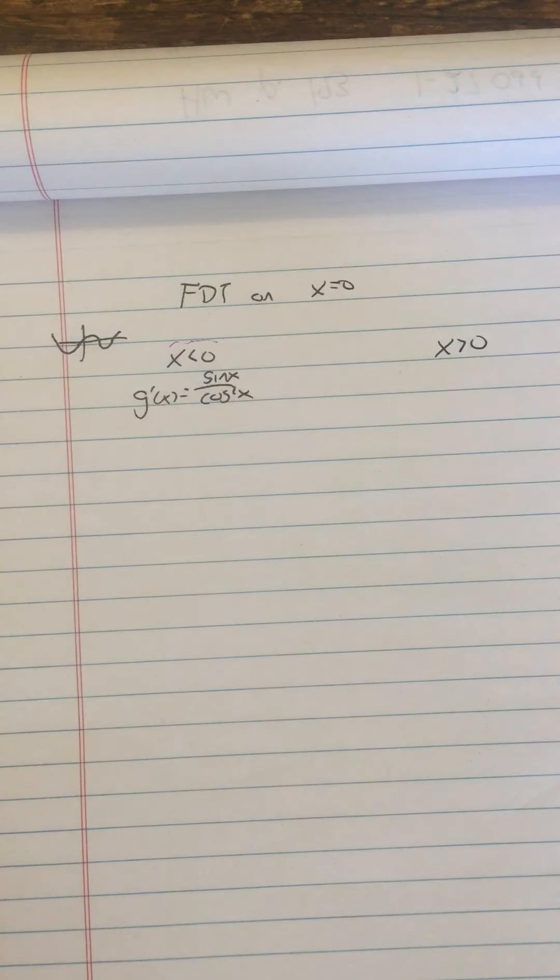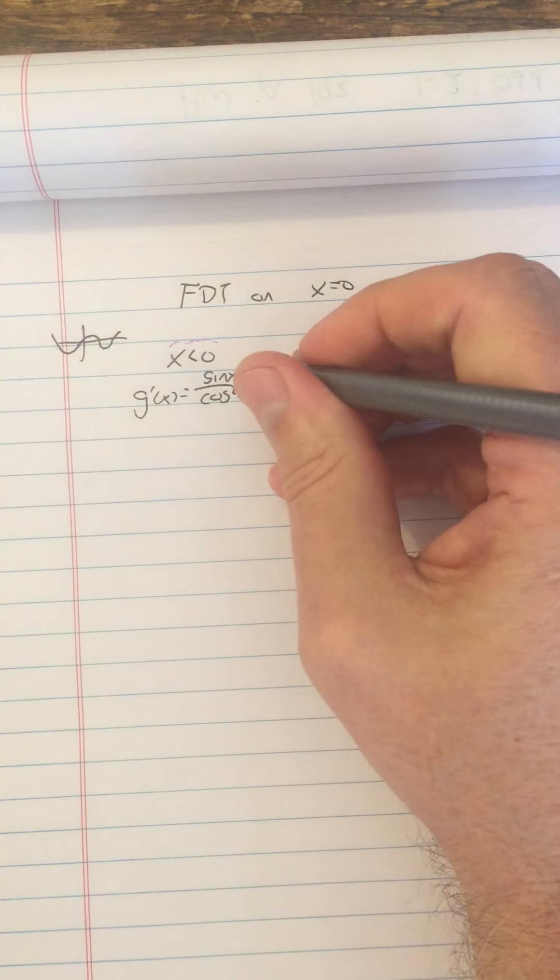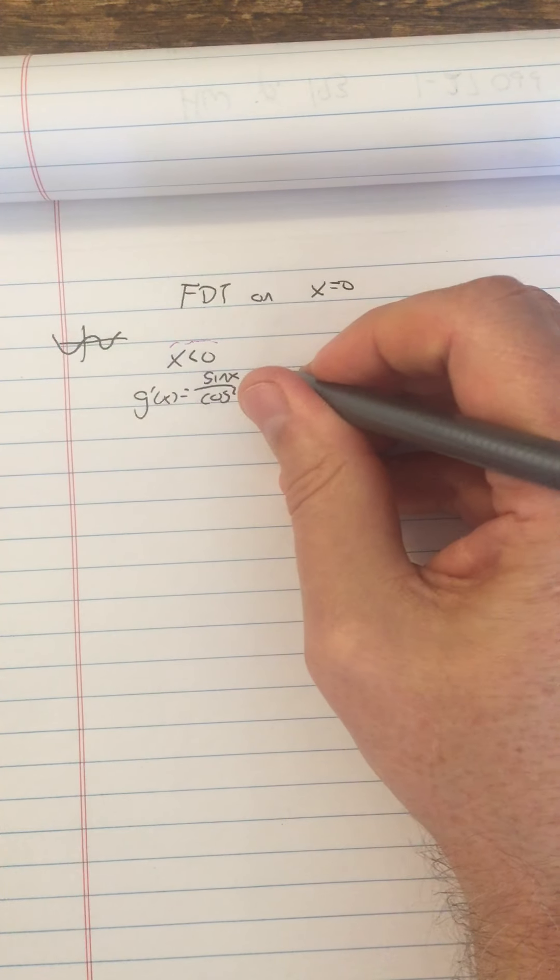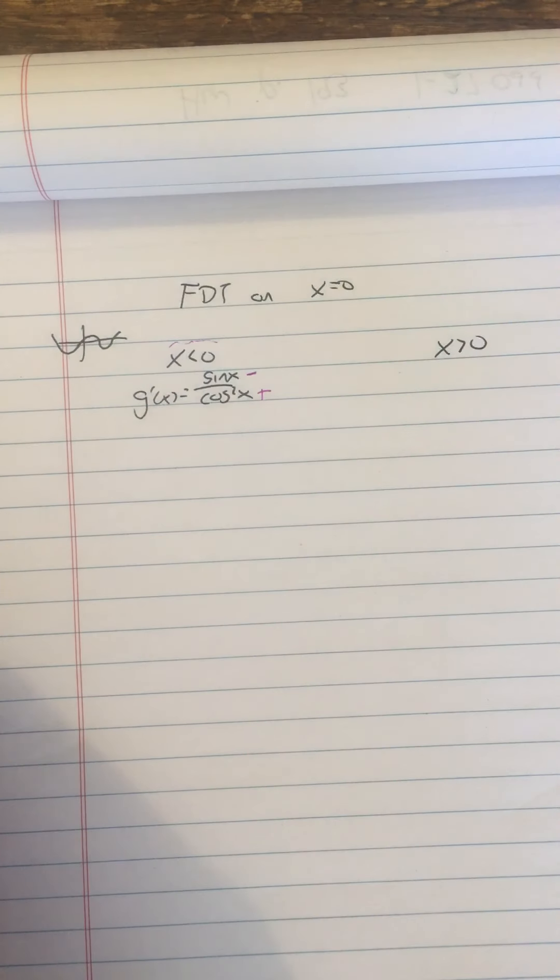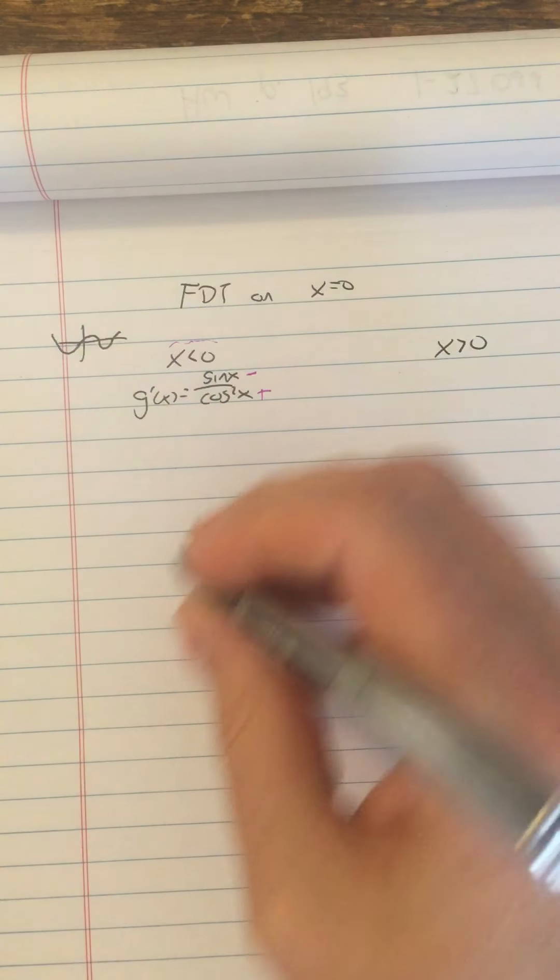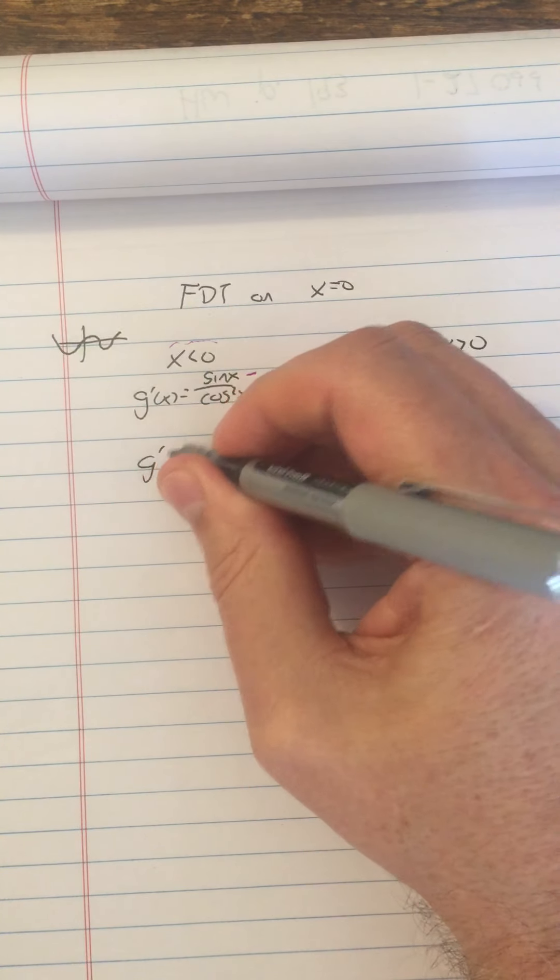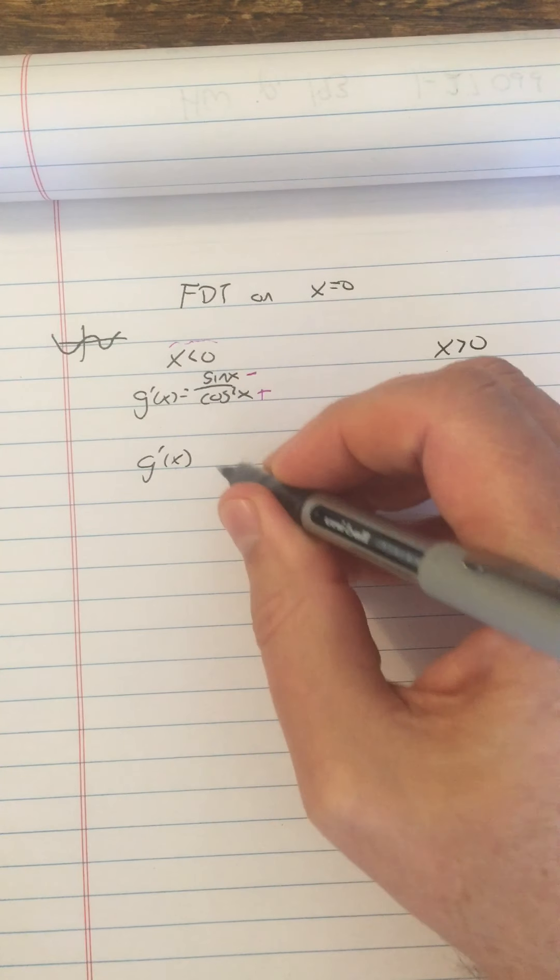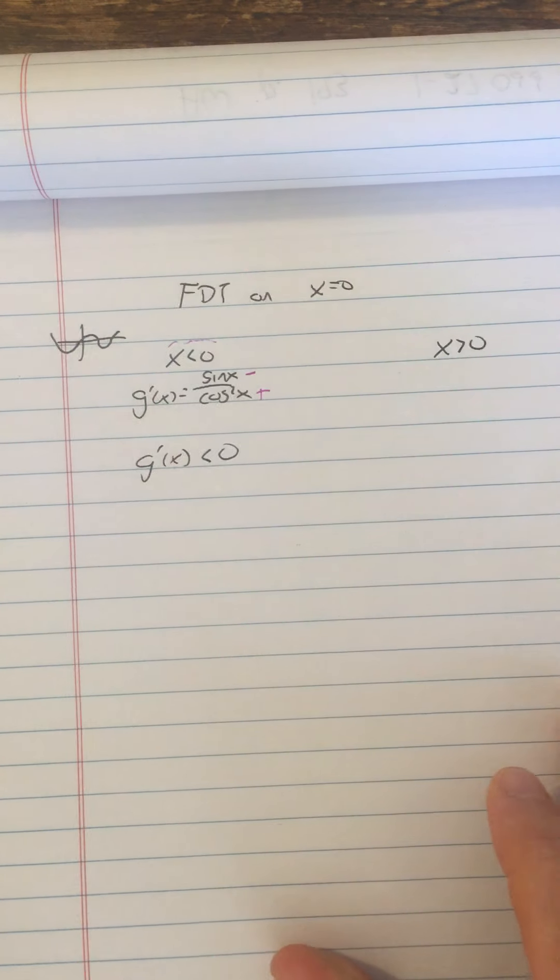Well I see that when x is less than zero, sine of x just to the left of zero is negative. Cosine squared, we like that because it's always positive. So that means that when x is less than zero, G prime of x is a negative divided by positive, so it's negative.